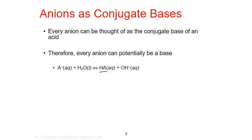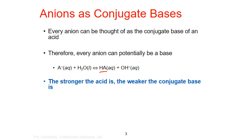Not every anion actually does act as a base. The likelihood that an anion will be a strong enough conjugate base to extract a proton from water and influence the pH of the solution depends on the strength of its corresponding primary acid. In general, the stronger the primary acid, the weaker the anion is as a conjugate base, and the less likely it will be to influence the pH of a solution.